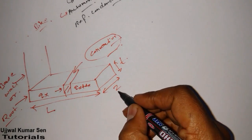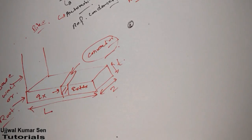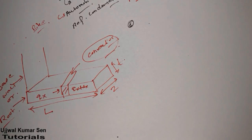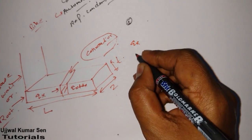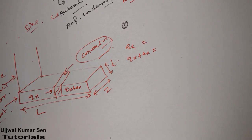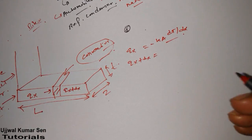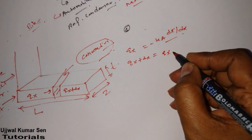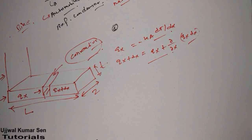Here, z is the width of the fin. Our objectives in this video are to find out the temperature distribution, the slope, and the heat transfer rate. Now, qx is heat conducted into the element, equal to k·A·(dT/dx), and qx plus dx is the heat conducted out of the element, equal to qx plus (∂/∂x)·qx·dx.